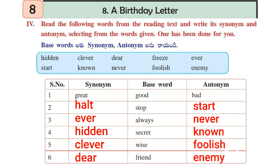Next: Always — meaning is Ever — opposite is Never. Next: Secret — meaning is Hidden — opposite is Known. Next: Wise — meaning is Clever — opposite is Foolish. Next: Friend — meaning is Dear — opposite is Enemy.